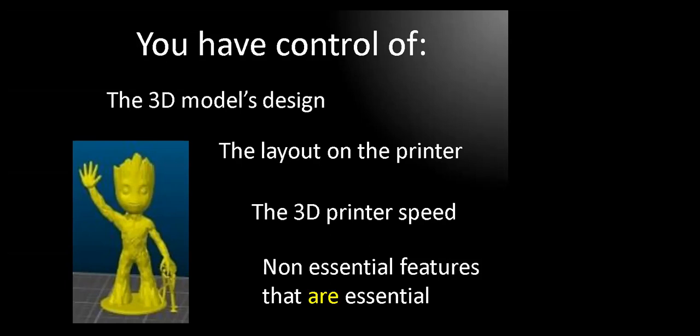Let's just say you want to print some baby Groots there. You have to deal with the fact that one arm is at an angle and has to be printed, hopefully without support. You also have to deal with the fact the fingers hang down and do need support. And the question is, do you let the slicer handle that or do you design it in yourself as part of the model? Those are the things that you have to be thinking about since you control the design.